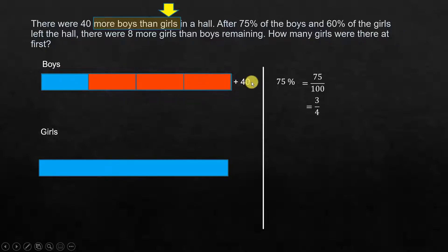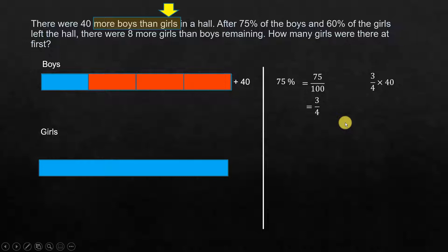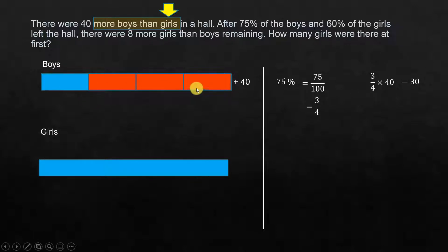We also have a known quantity, so that is 3 fourths of 40, which is 30 — the number of boys who left from that portion. So from the unknown component, if we divide it into 4 parts, 3 parts represent students who left. And from the known quantity of 40, 30 students left.